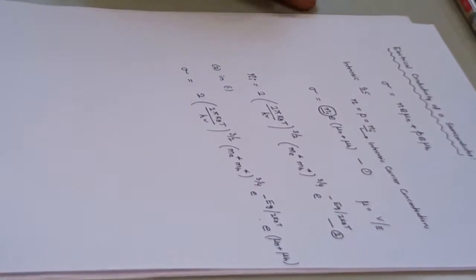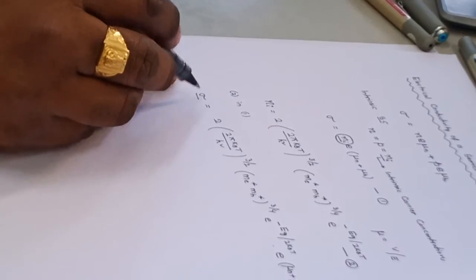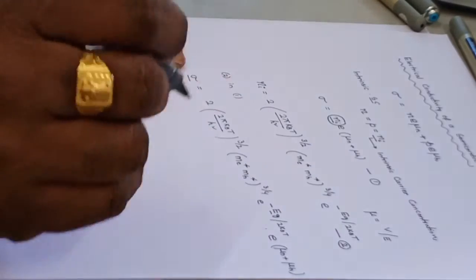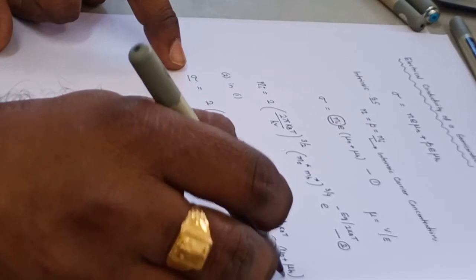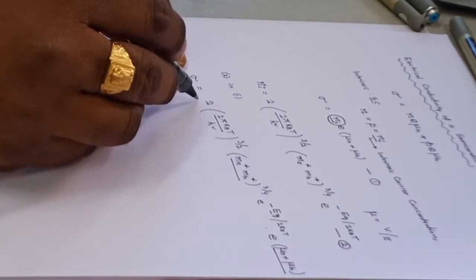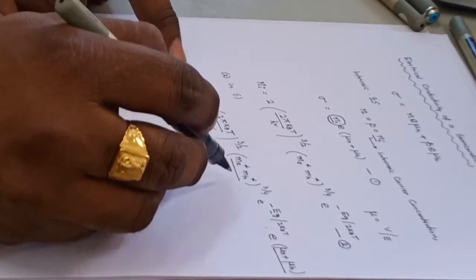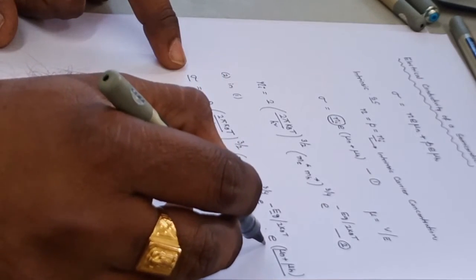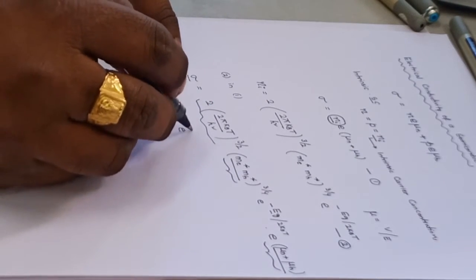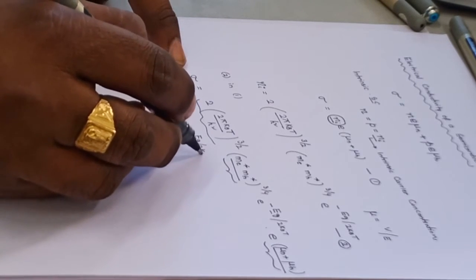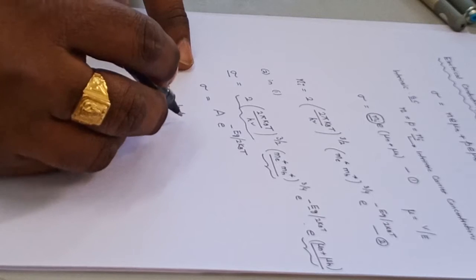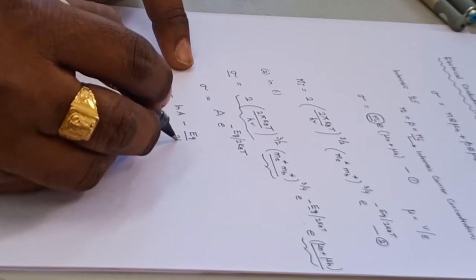From this, you can see that the conductivity is directly proportional to the negative exponential of the band gap and directly proportional to the mobility and the effective masses of the electron and hole. Treating all other parameters as constants and absorbing them into a constant A, we write σ = A·exp(−Eg/2kBT). Taking the logarithm, ln(σ) = ln(A) − Eg/(2kBT).